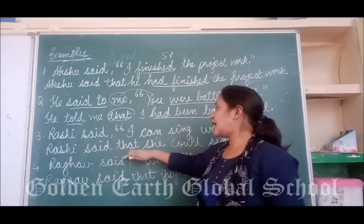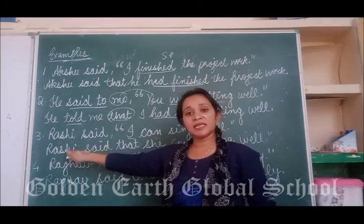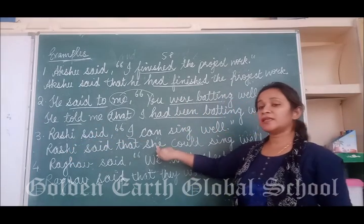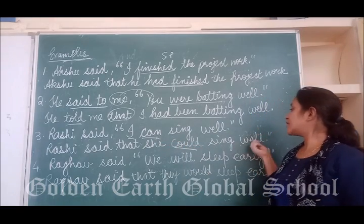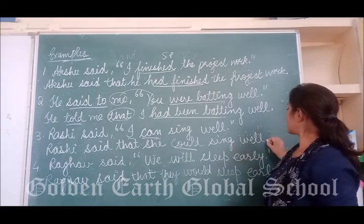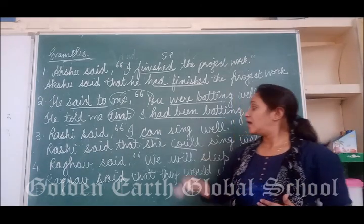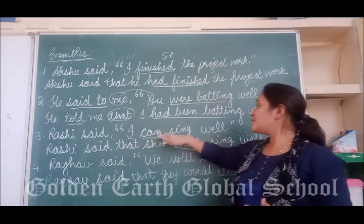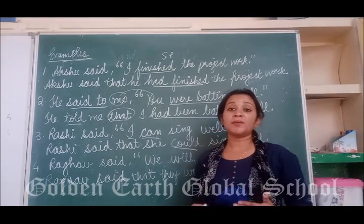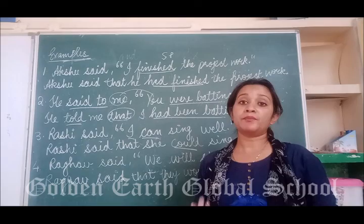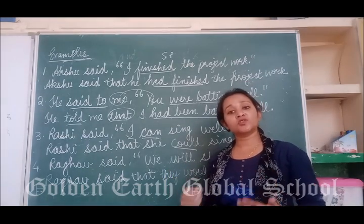Rashi said that — Rashi is the name of a girl, so 'I' changes to 'she.' 'Can' changes to 'could.' So: She could sing well. Full stop. If 'may' were there, it would change to 'might.' If 'will' were there, it would change to 'would.' If 'shall' were there, it would change to 'should.'